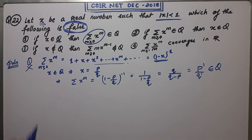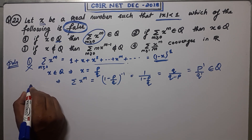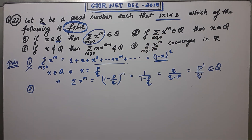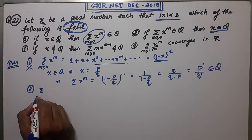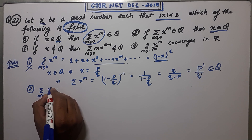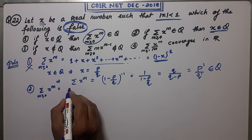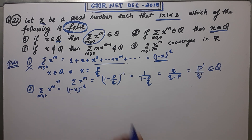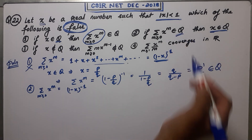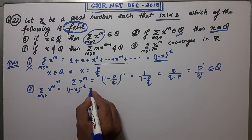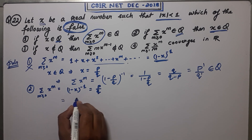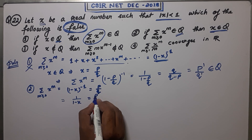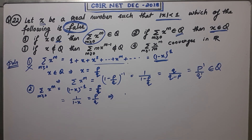Since the first option is correct, it is not the false one we need to answer. Now going to the second option: if the summation Σx^m belongs to Q, you have to check whether x belongs to Q or not. It's the same expansion — the sum is (1 - x)^(-1). They are saying this sum belongs to the rational numbers, so it is of the form p/q where p ∈ Z and q ∈ ℕ. Rewrite: 1/(1 - x) = p/q.